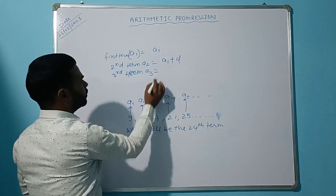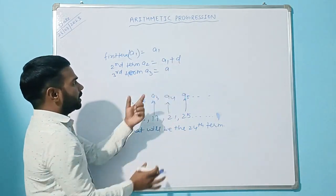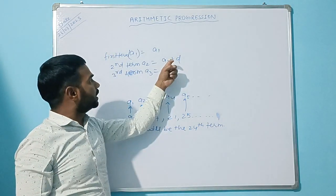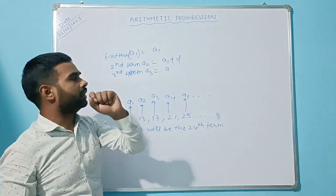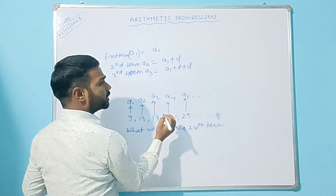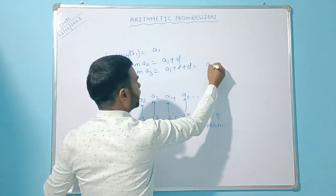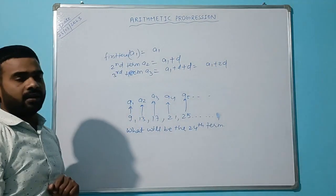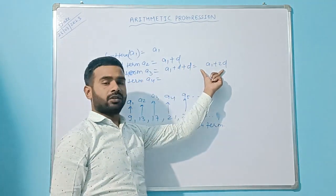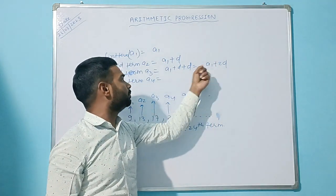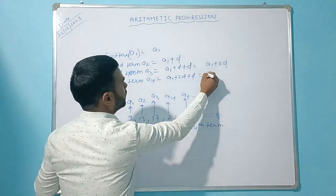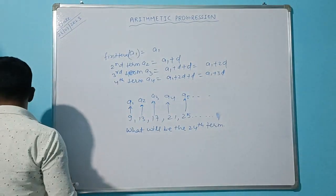The third term a3 is obtained by adding the common difference to the second term: a1 + d + d = a1 + 2d. The fourth term a4 is obtained by adding d to the third term: a1 + 2d + d = a1 + 3d.